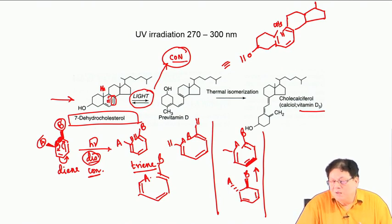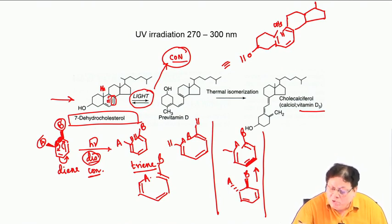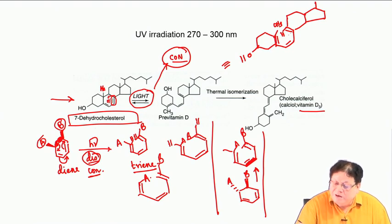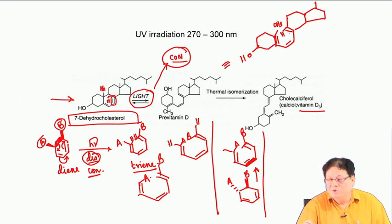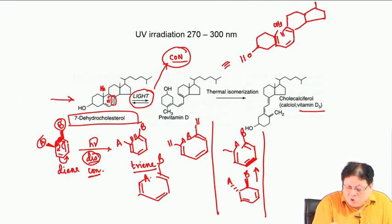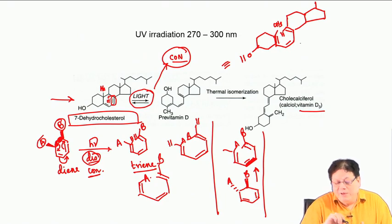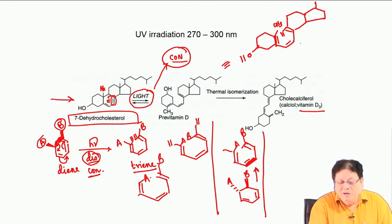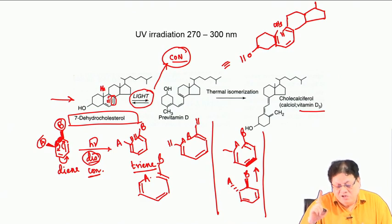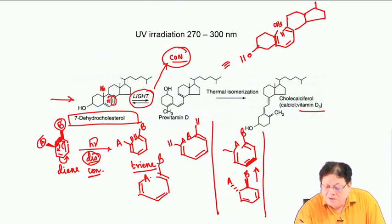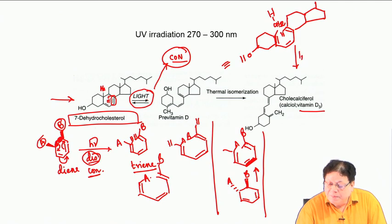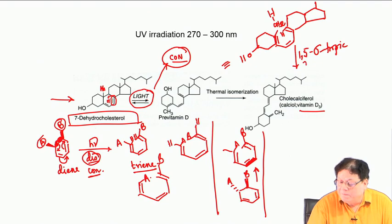That is why this process must be conrotatory, and that is why it is done only in light. Then there is a thermal isomerization, which is a 1,5-hydrogen shift — a sigmatropic reaction.